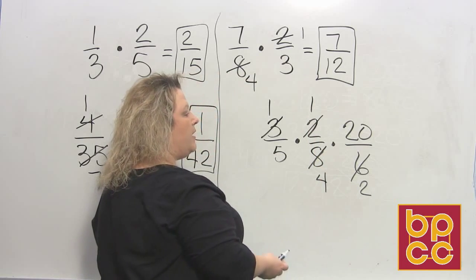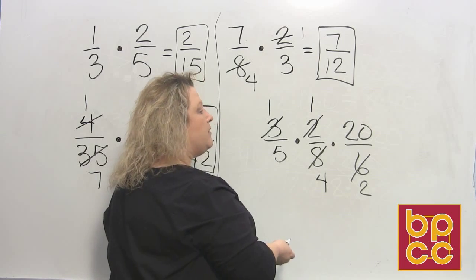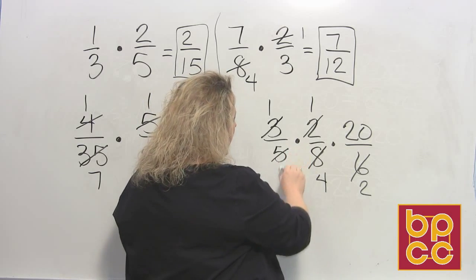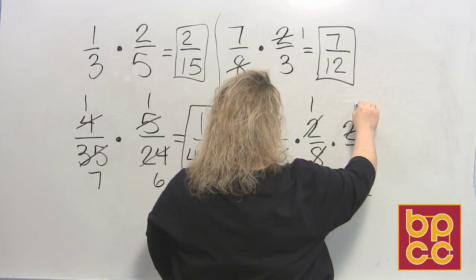And then I look at my last numerator, twenty. Does twenty have anything in common with any of the bottom numbers? It does, with five. Five divides into five one time, five divides into twenty four times.